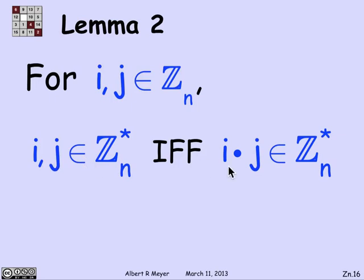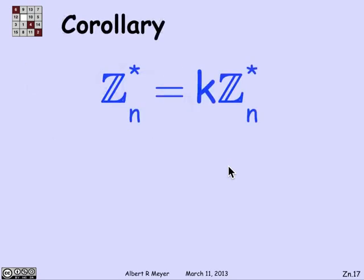It's worth mentioning that in general their sum is not. If you add two elements that are relatively prime to n, even if their sum is non-zero, you will typically get an element that is no longer relatively prime to n. But for multiplication, it works great. And that's what matters to us.